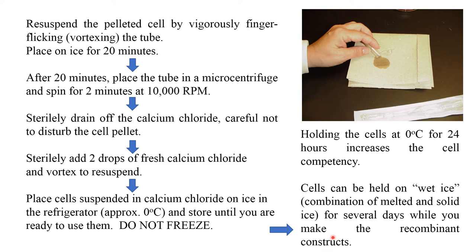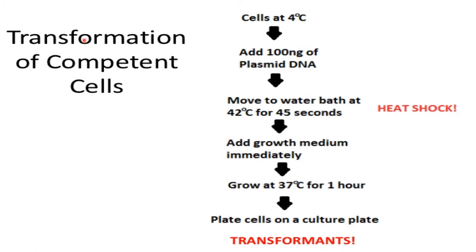The steps involved in transformation of competent cells: first, take the competent cells at 4 degrees centigrade in an Eppendorf tube and add 100 nanograms of plasmid DNA. Then move to the water bath — place the tube in the water bath at 42 degrees centigrade for 45 seconds.